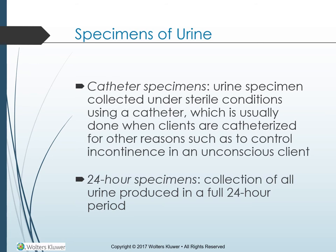For 24-hour specimens, the nurse collects, labels, and delivers all urine produced in a full 24-hour period to the lab. Because urine contents decompose over time, the collected urine is placed in a container with a chemical preservative or kept in a basin of ice or a dedicated specimen refrigerator. To begin the collection, the client urinates just before the start time and discards that urine. All urine voided thereafter is collected. Exactly 24 hours later, the client voids one last time to complete the collection, and the nurse labels and takes the total specimen to the lab.